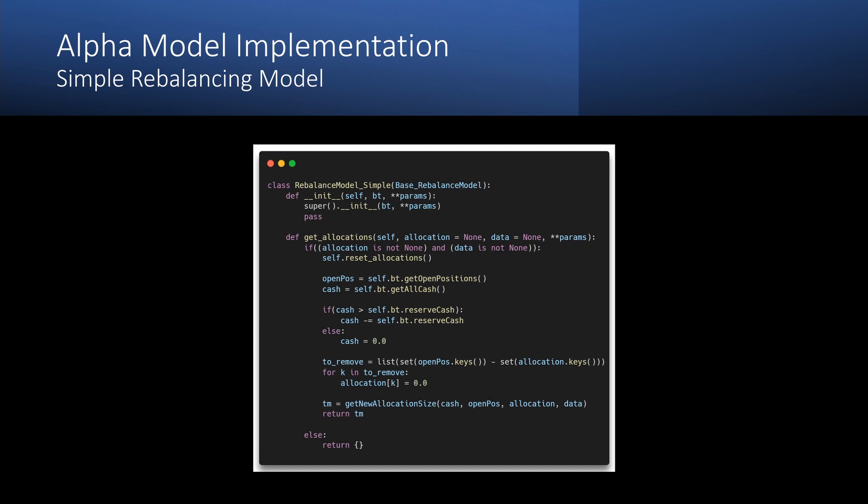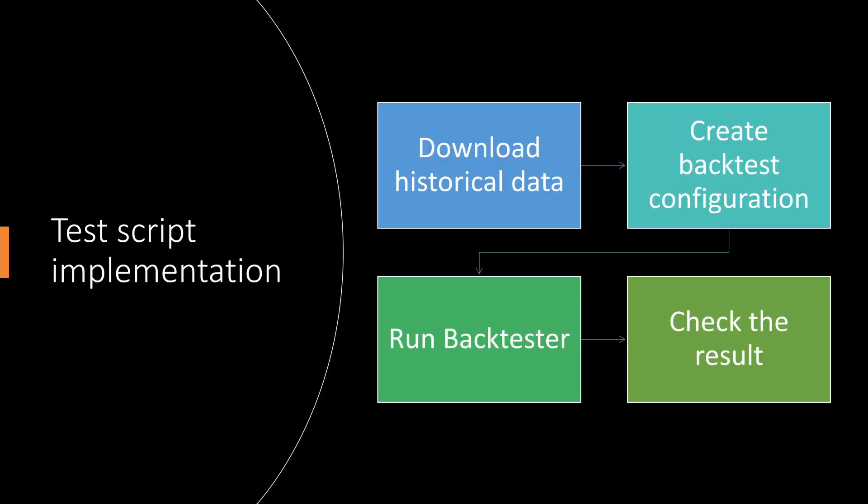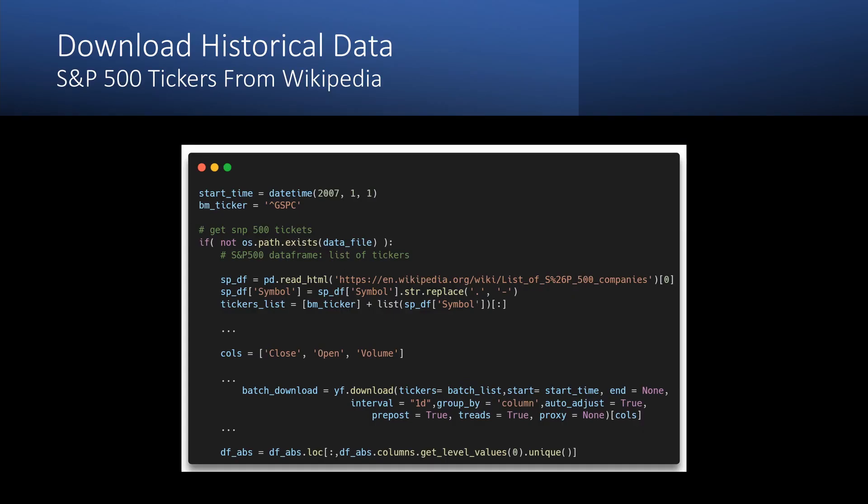So after all of our models are done, let's see how to use them. First of all, we need some data. I am going to use the current list of S&P 500 tickers for my universe. We will download the historical price data of all the stocks starting from January 2007.